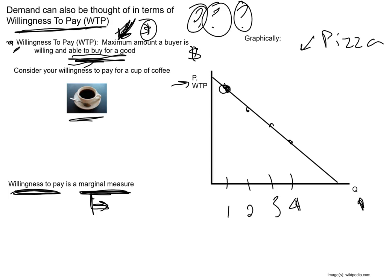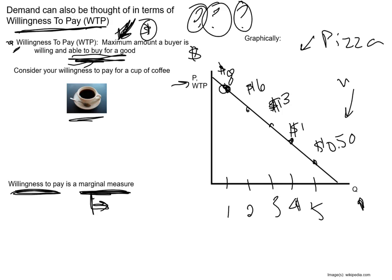Let's put some hypothetical numbers on willingness to pay for pizza. Say you're willing to pay $8 for the first piece, $6 for the second, $3 for the third, $1 for the fourth, and $0.50 for the fifth. If the price of pizza is $4, do you want to buy that first piece? You do — your willingness to pay of $8 is above the price. How about the second piece at $6 willingness to pay? Yes. The third at $3 willingness to pay? No — costs exceed the value.